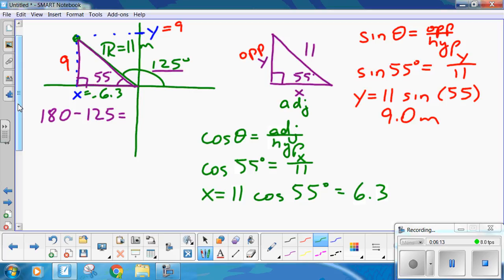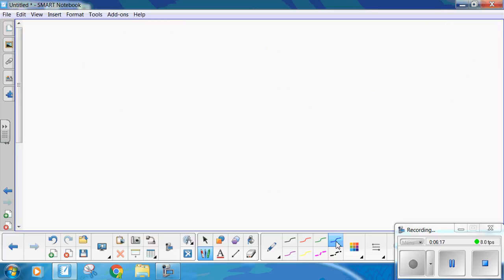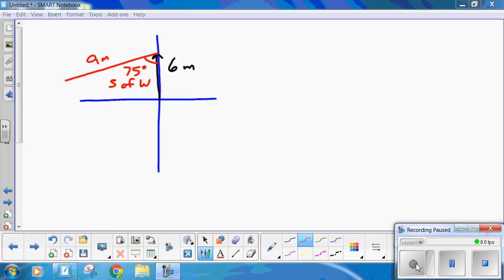Now, putting it all together for the last question. You walk 6 meters north. And then you walk 9 meters at 75 degrees. Excuse me. North. Sorry. South of west. So, you go west. Sorry. Sorry about that. My bad. So, you're going 75 degrees. You're going south. And then you swing west to make 75 degrees. So, it's 75 degrees west of south.